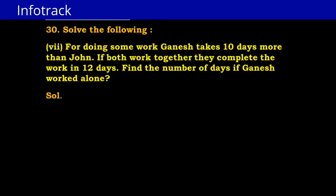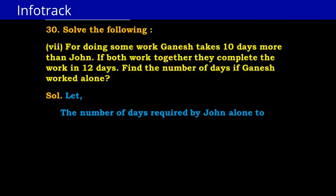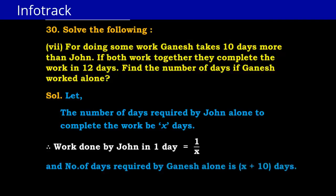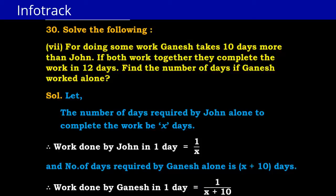Let the number of days required for John alone to do the work be X. Therefore, work done by John in one day is 1/X. Now, Ganesh takes 10 days more, meaning the number of days required by Ganesh alone is X + 10 days, and the work done by Ganesh in one day is 1/(X + 10).